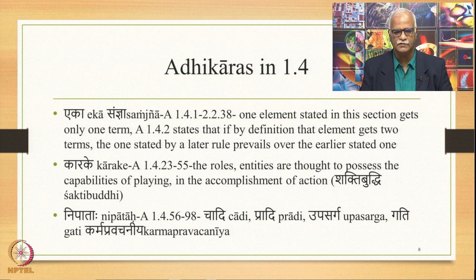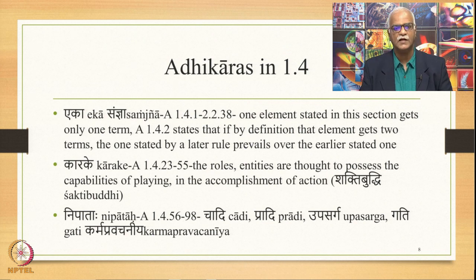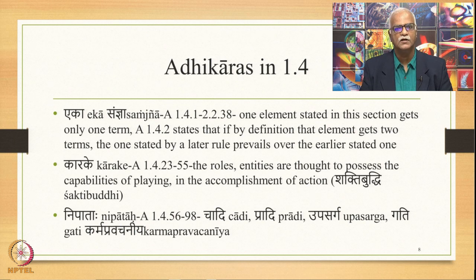The next important Adhikara in 1.4 is Karake, from 1.4.23 to 1.4.55, in which the roles — the entities thought to possess capabilities of playing in the accomplishment of action — are described. Shakti buddhihi karakam as given by Shabda Sutra. Nipataha is another Adhikara from 1.4.56 up to 1.4.98, covering groups of words including Chadi and Pradi, those termed Upasarga and Gati, and also Karma Pravachaniya. All of them are called Nipatas, and all Nipatas are termed Avyaya by Swaradi Nipata Mavyam.